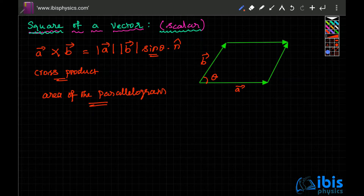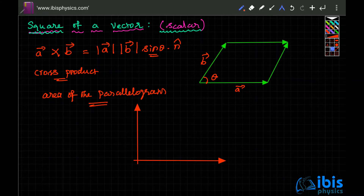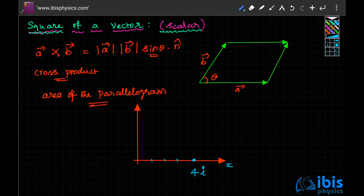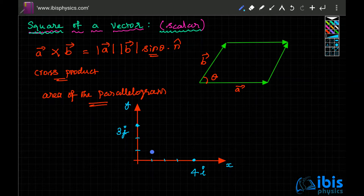Let me give you an example. Consider the x-axis and y-axis. Take a point at 4 units along the x-axis — its position vector is 4i-cap. Take another point at 3 units along the y-axis — its position vector is 3j-cap. Let's call these points P and Q respectively.